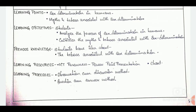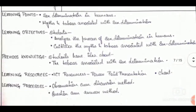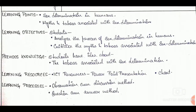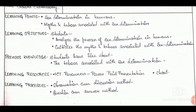Next are the learning points — here we have only two learning points. Then comes learning objectives, and again the keywords are taken from Bloom's taxonomy. Next are previous knowledge of the learners, then we have learning resources. Then comes learning processes — in learning processes we have observation-cum-discussion method and question-cum-answer method.